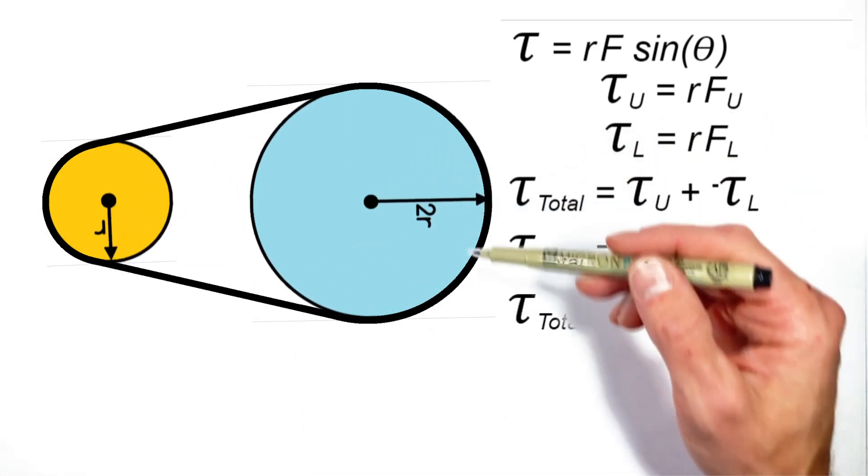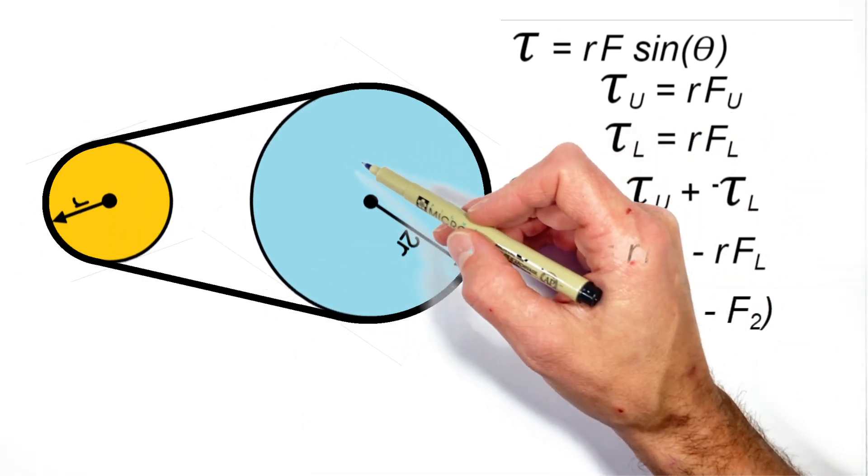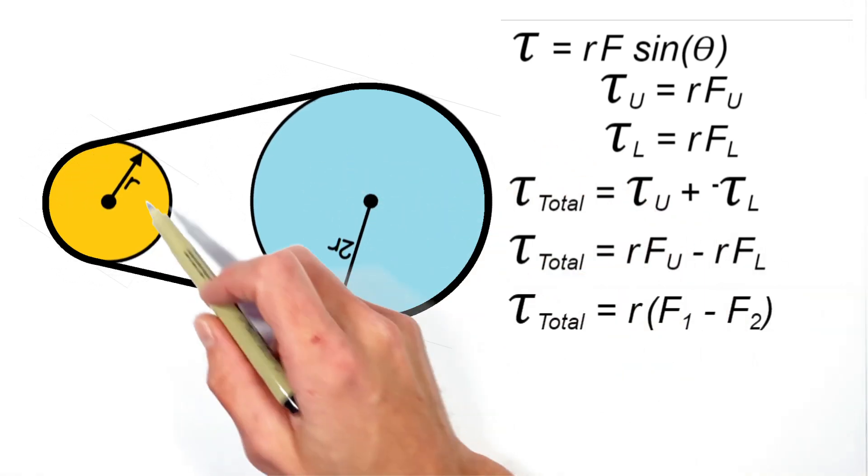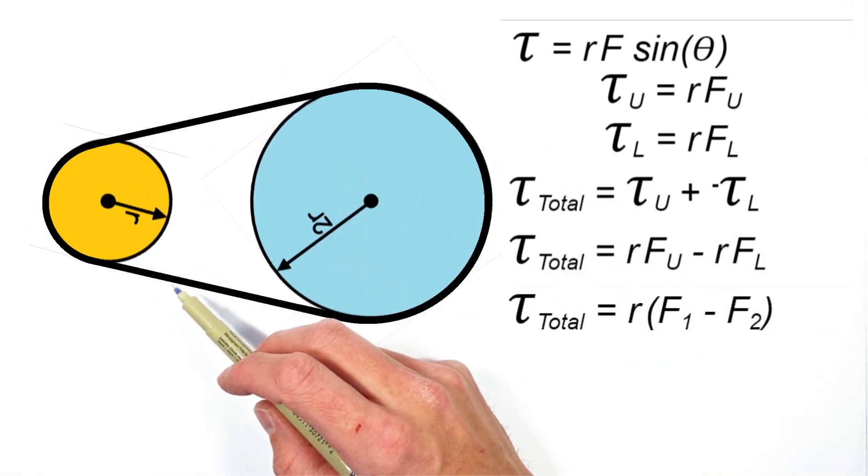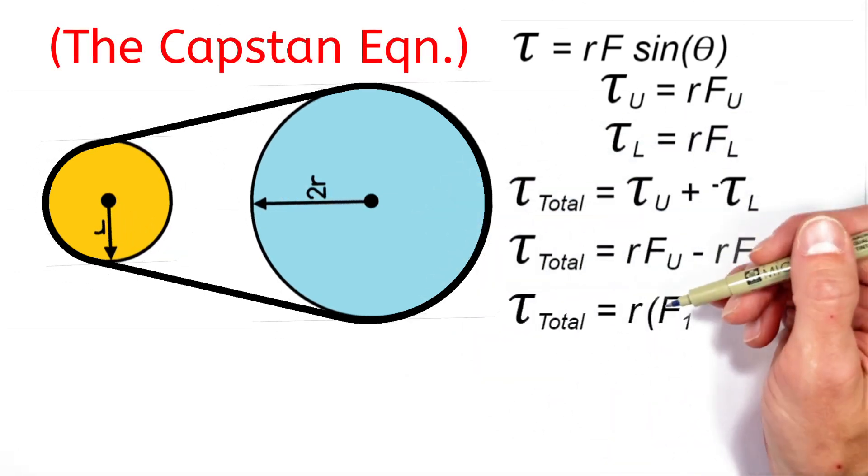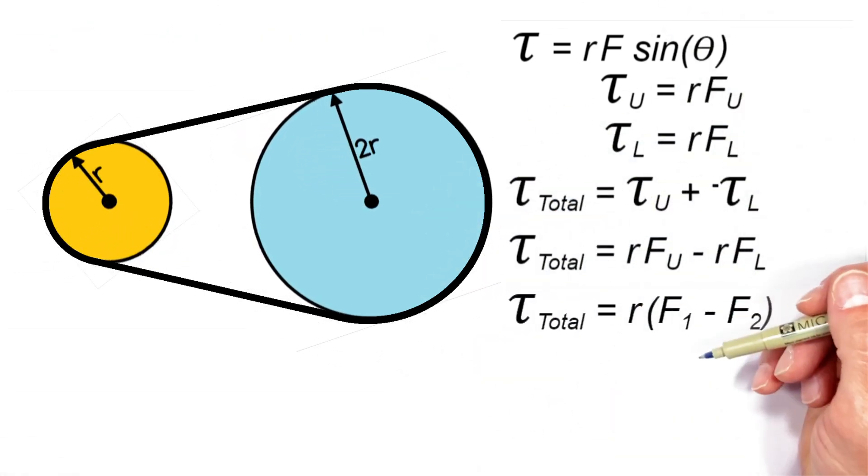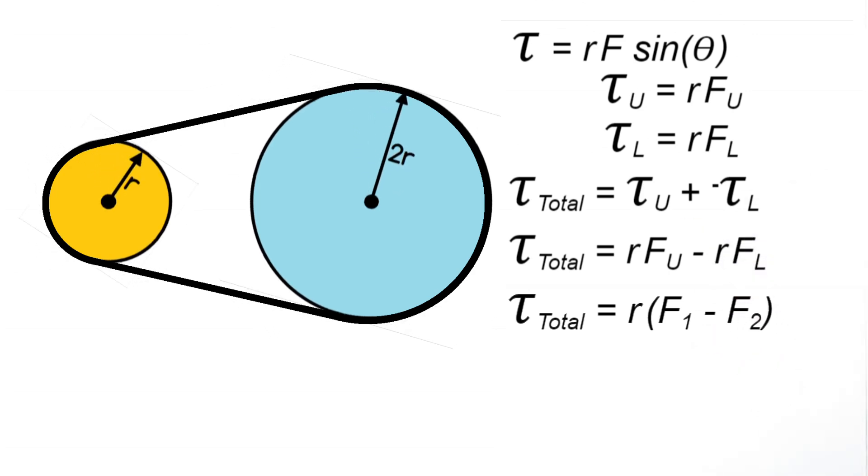Now a typical way to take this problem a step further is to look at how much friction is required to keep the belts from slipping over either of the pulleys, and that leads us to something called the capstan equation, which is a topic for another video. So I hope you found this useful, and on that note, that's all for now.